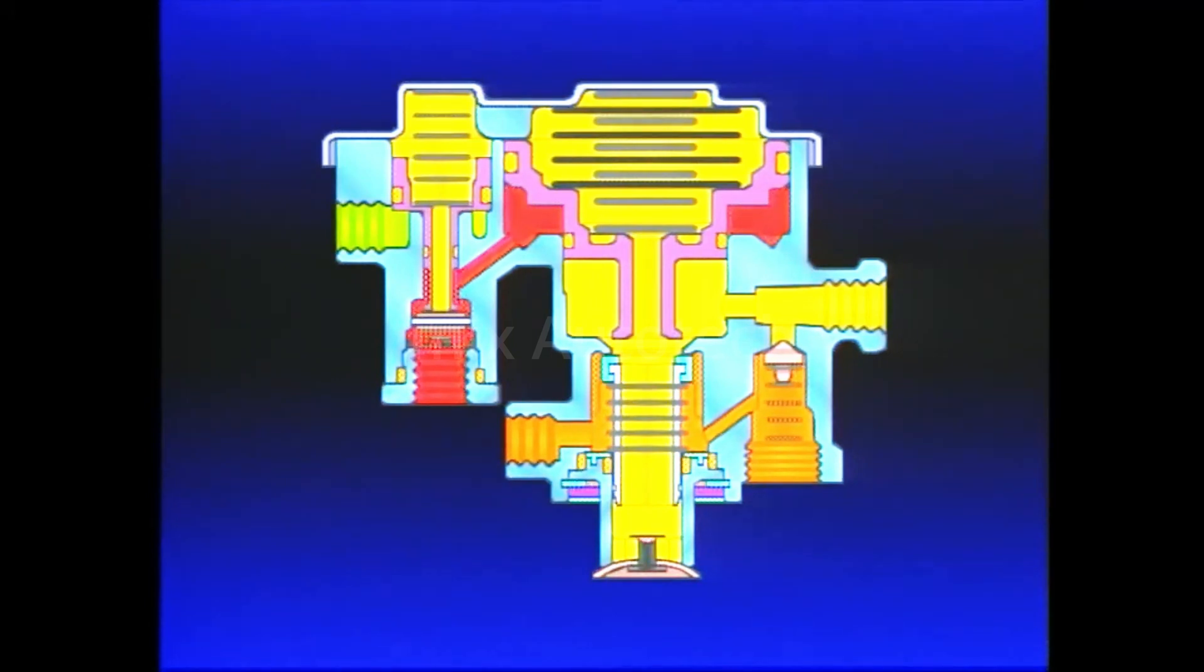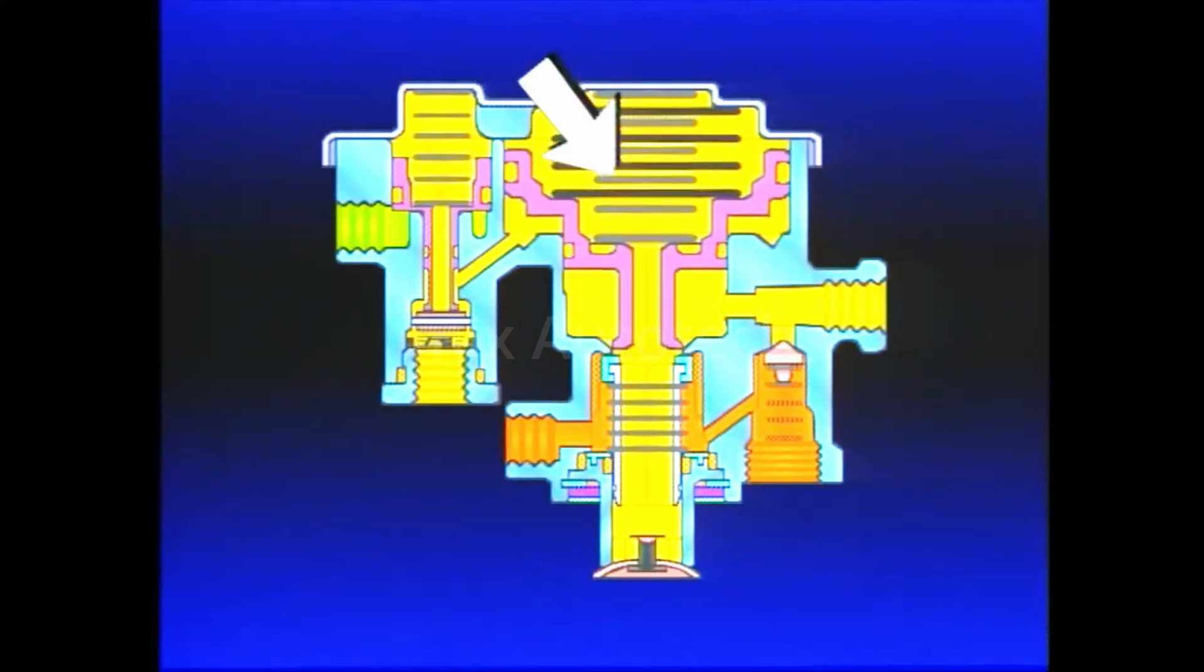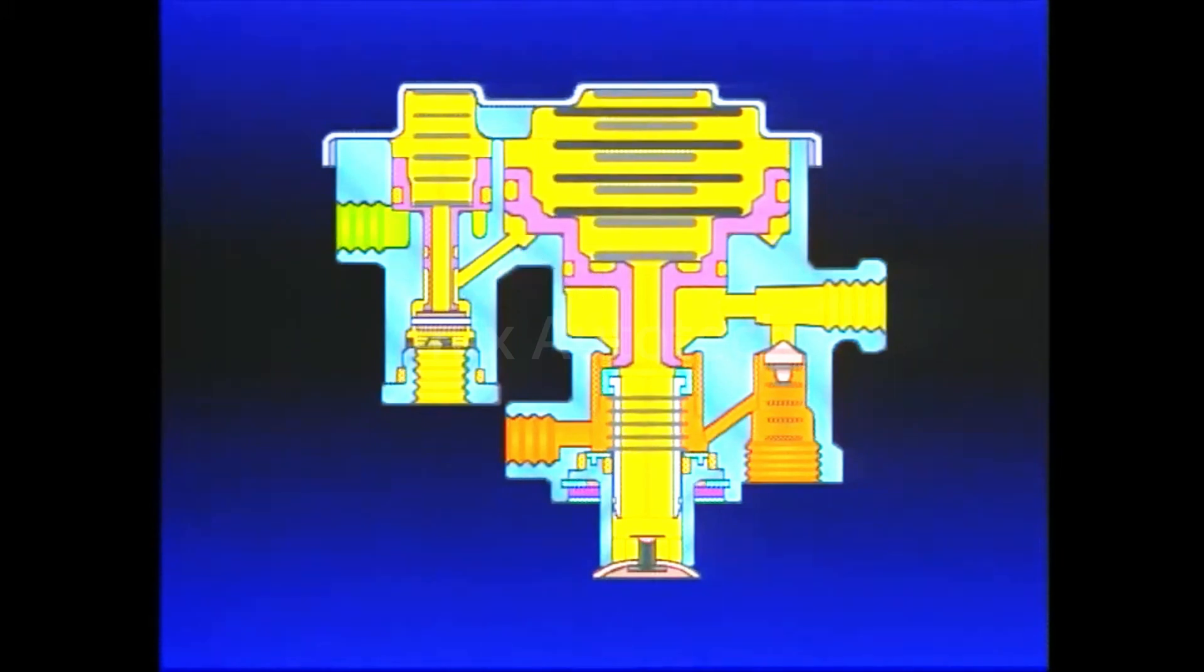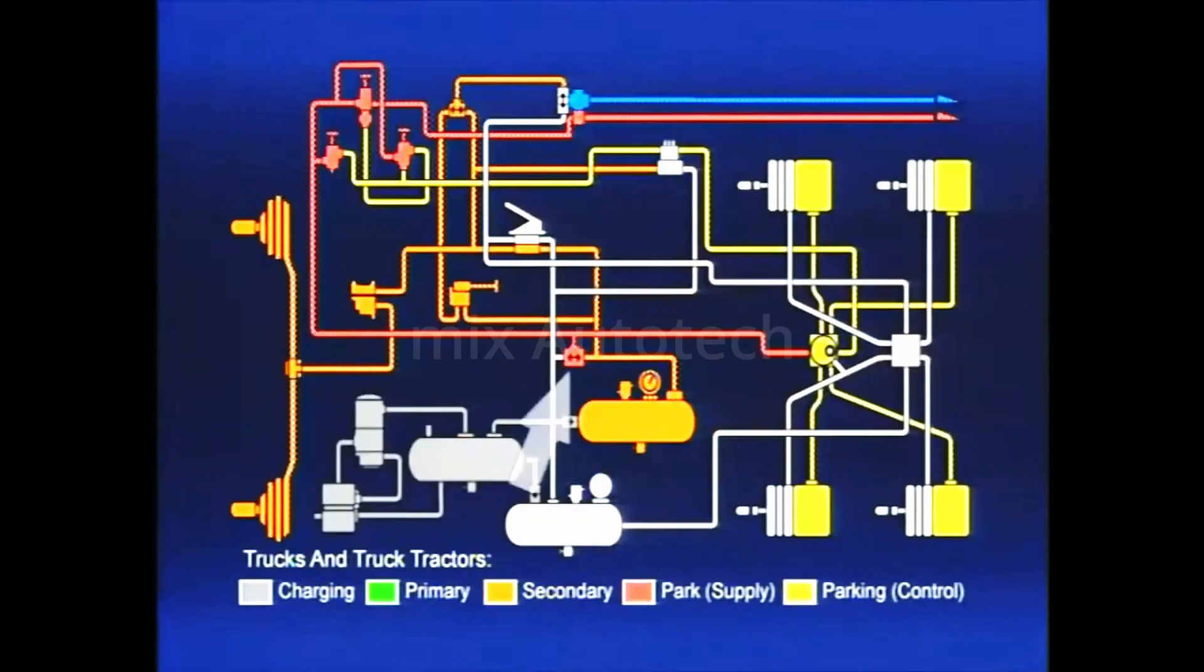When the foot brake is released, the air pressure in the outer area of Piston B is exhausted back through the foot valve. The springs above Piston B move it down, opening the inlet, allowing air from the front service reservoir to flow through the double check valve, the PP1, the open inlet of the SR1, and into the spring brakes to recharge them.